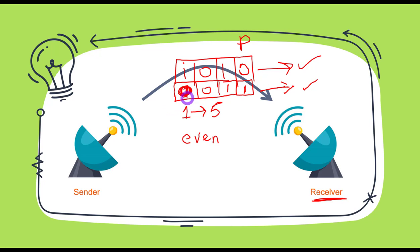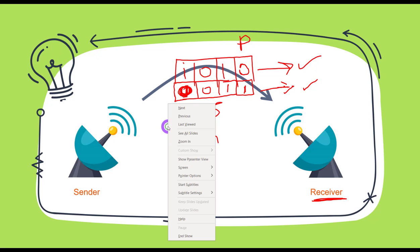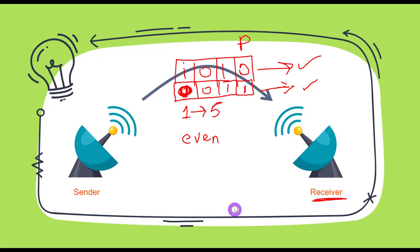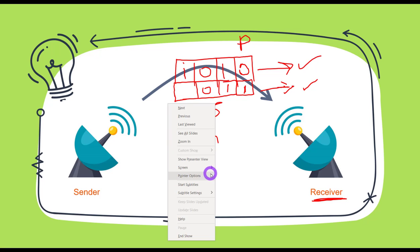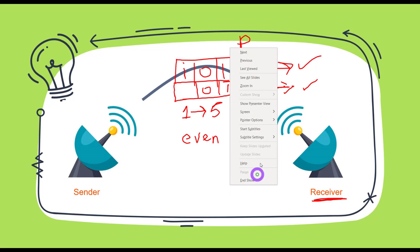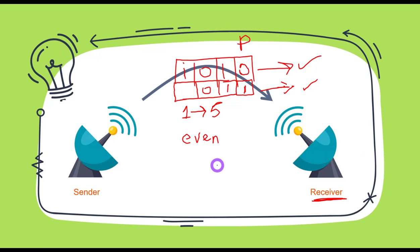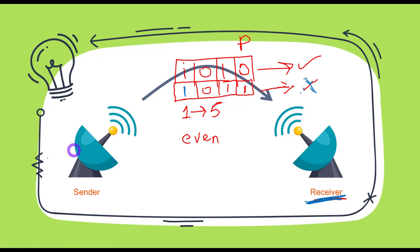But let's say some error occurred and a bit changed, as we were talking about before. Let's say it changed and now, because of the error, it is one there. Now the total number of ones are odd. So at the receiving end when it checks, it will say there is some error in this message. It will ask the sender to send this particular message again because the total number of ones are odd, not even as we designed the system to be.